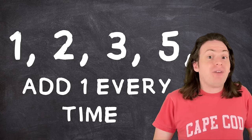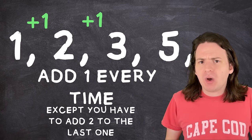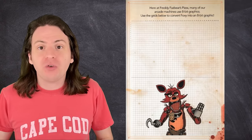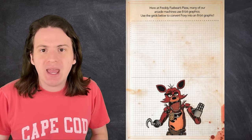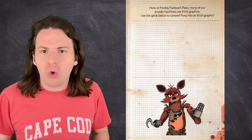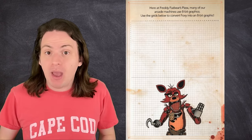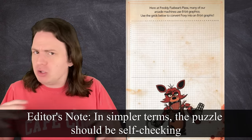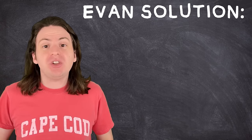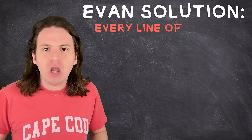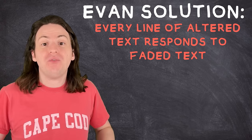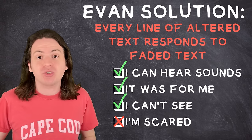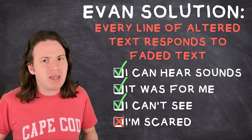You couldn't do something like: you have to add one every time, except for the last one, you need to add two arbitrarily. The same rules apply to this puzzle. In order for a solution to be for sure correct, it needs to be a clearly defined rule that applies exactly the same everywhere. As a general rule of thumb, if you need to use the word 'except' in your solution, you should probably go back to the drawing board. The Evan solution is based on the rule that every altered line responds to a piece of faded text. But the last one does not respond to faded text. It doesn't follow the established rule. Therefore, this solution probably isn't valid.